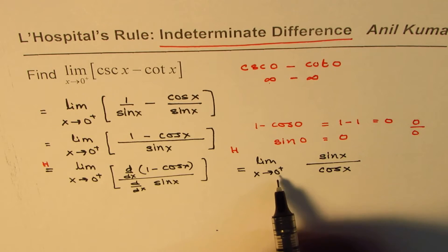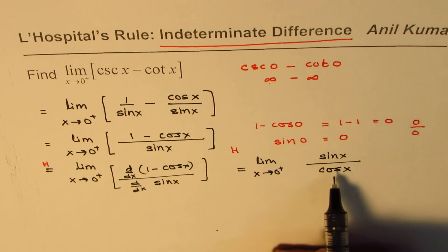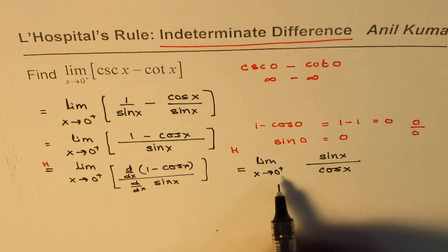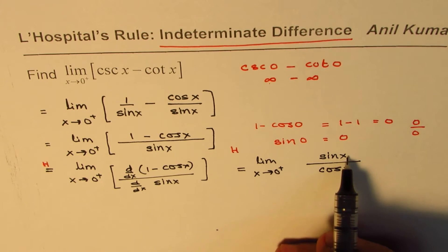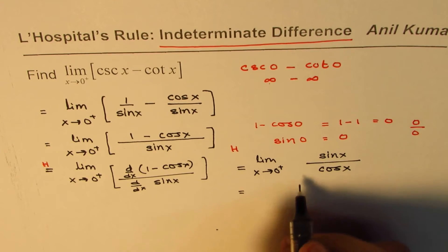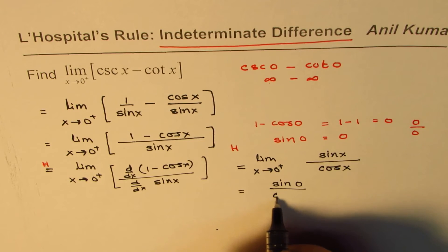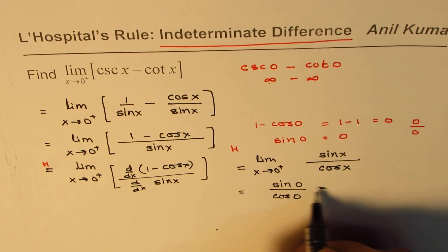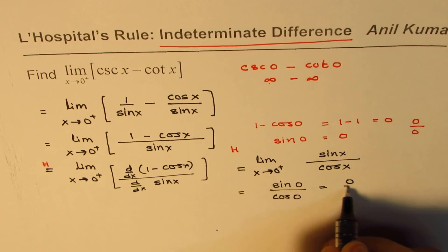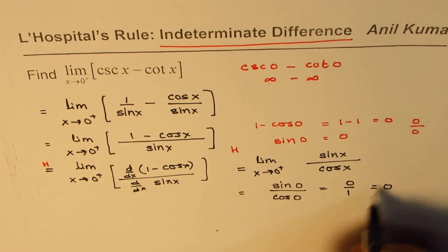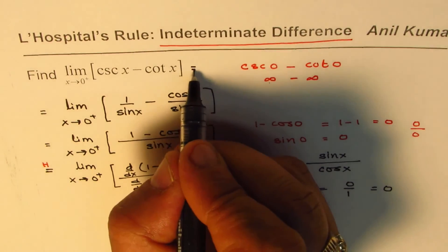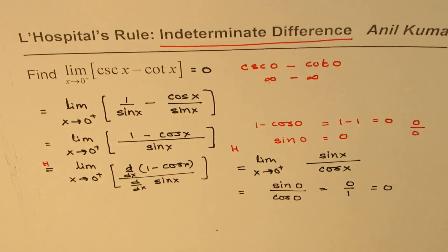So we get limit x approaches 0 from the right side, sin x over cosine x. Now if I substitute 0, what do I get? We get sin 0 over cos 0. Sin 0 is 0 and cos 0 is 1. So we get answer as 0. And therefore, this limit is equal to 0.